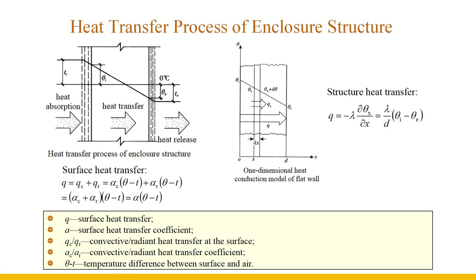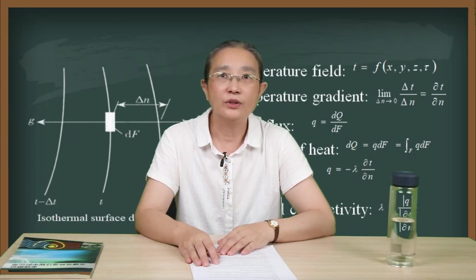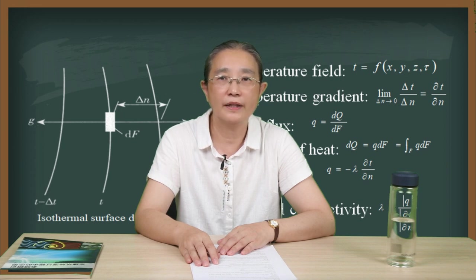Let alpha be the surface heat transfer coefficient: α = α_c + α_R, then Q = α × (T_surface − T_air). Alpha can be taken according to the thermal engineering design specification for stable buildings. The heat transfer of the structural layer can be calculated according to Fourier's law. Think about it: how to use this basic knowledge to calculate the heat transfer of the envelope structure? Is annual indoor and outdoor heat flow transfer beneficial to the indoor heat and humidity environment, and if unfavorable, how to avoid or reduce its impact through architectural design methods?